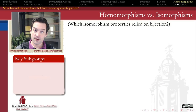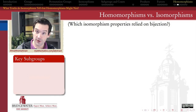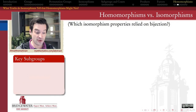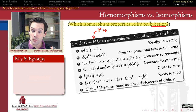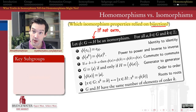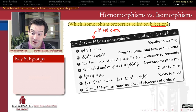We're going to answer this question by reaching back to the videos on isomorphisms and going point by point through each of the properties that were preserved by isomorphisms, asking which of those properties relied on having a bijection, and which ones only used the homomorphism property — the product rule. Those that only relied on the homomorphism property will therefore still be true for homomorphisms.